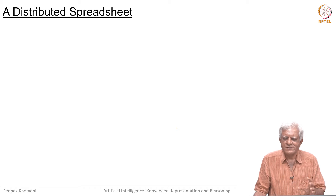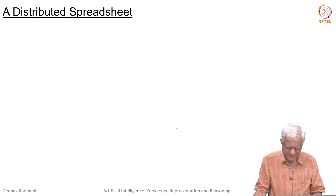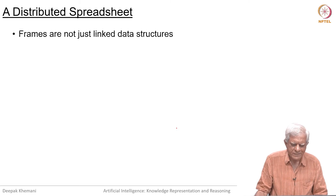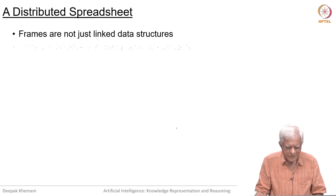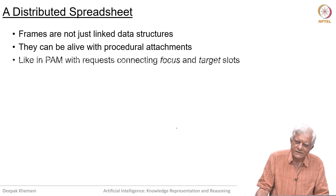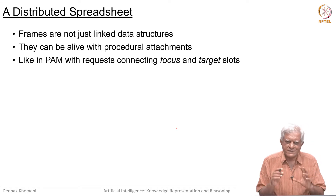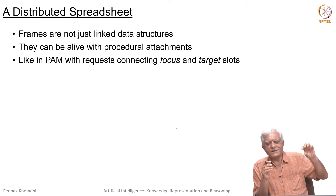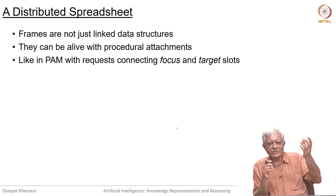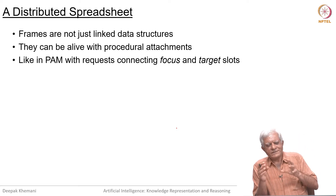One aspect of looking at frame systems is to see them as distributed spreadsheets which we can use for some activity that we are doing, some kind of planning. So they are not just linked data structures — we saw that we have links to other frames. They can be alive with procedural attachments. Just like in a spreadsheet when you change some value in some cell, there are formulas sitting in other cells which will also change the value stored in that cell. In that sense, propagation can happen.